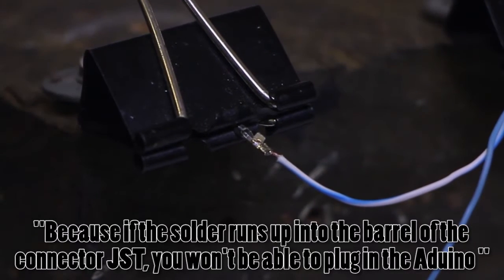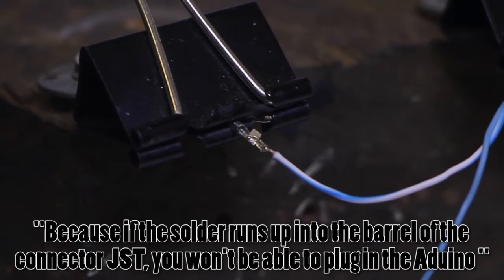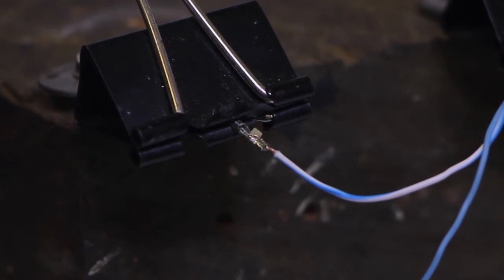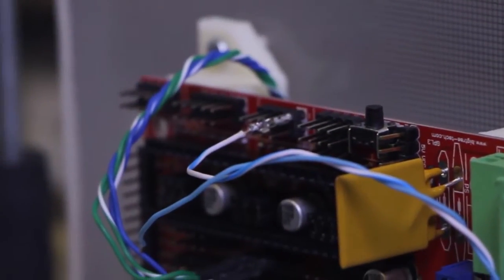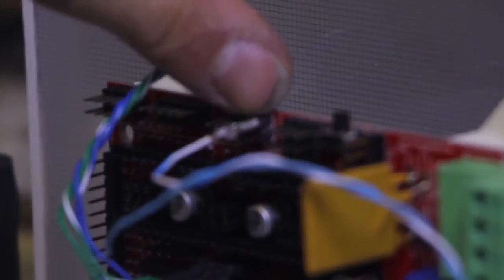If the solder runs up into the barrel, you won't be able to plug it into anything. It'll lock the pin. So we can test that too while we've got a pin handy here. I'll just plug that in before we heat shrink it. You can see it inserts all the way to the end of the pin.